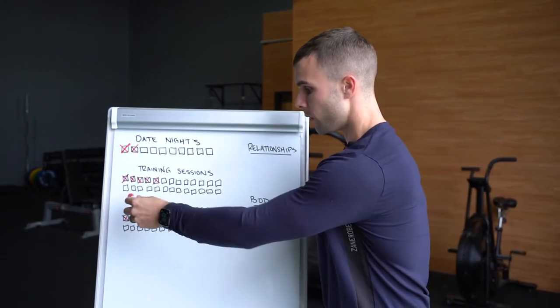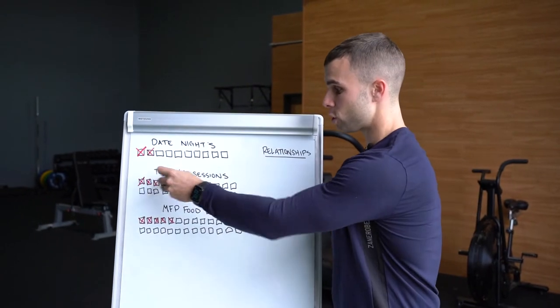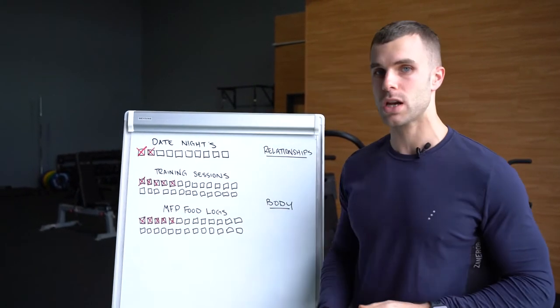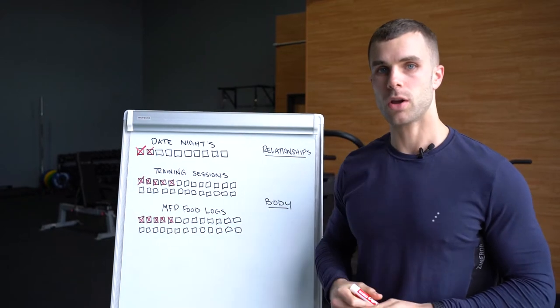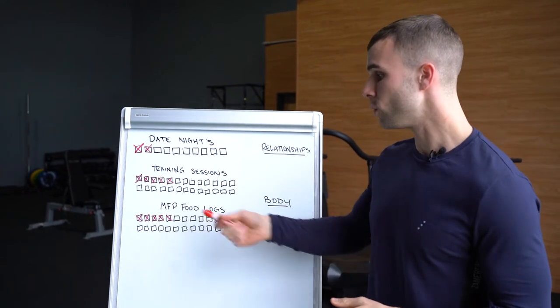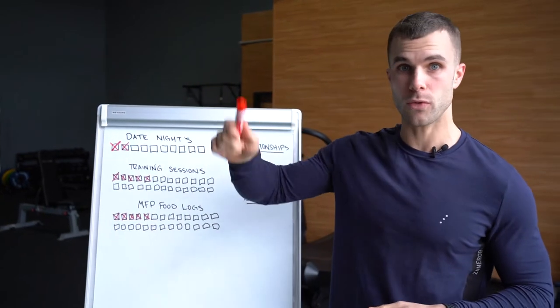So what do you do? You draw a bunch of black boxes around the training sessions. And every time you accomplish a training session, red marker, mark it off. You see it every day. Food logs, same exact thing. Every day you do a food log, you mark it.